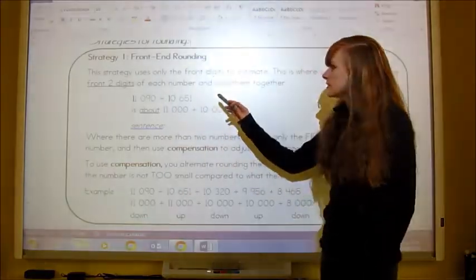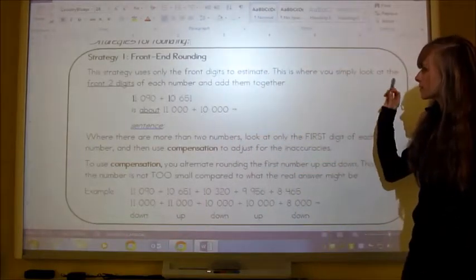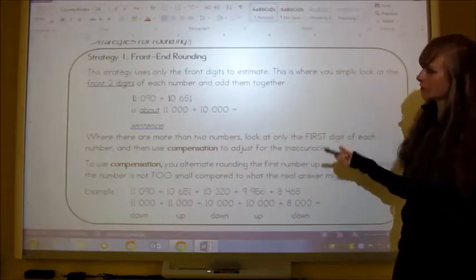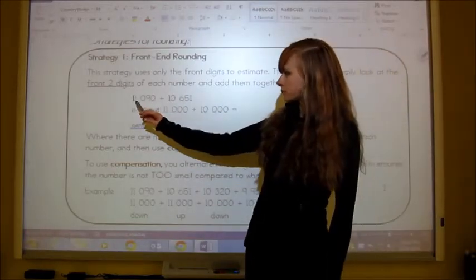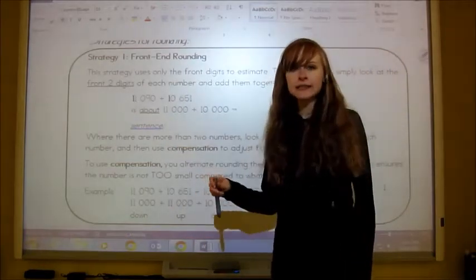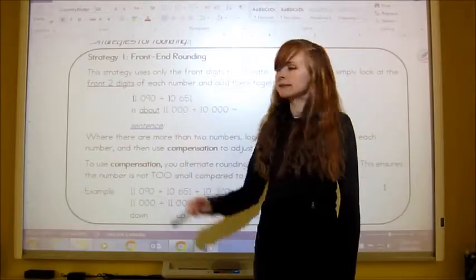This strategy uses only front digits to estimate. This is where you simply look at the front two digits of each number and add them together. We've got the 11,090, and that gets rounded to just 11,000.